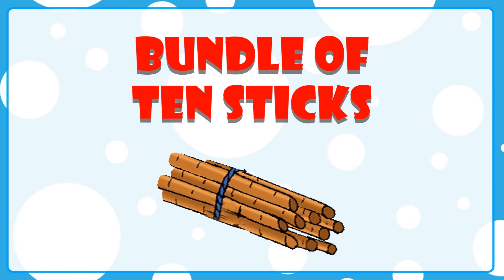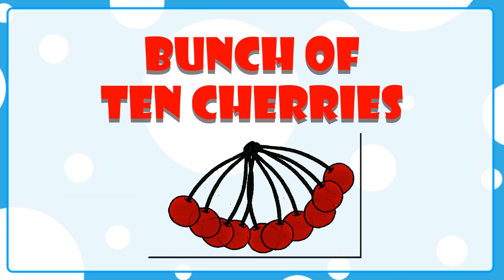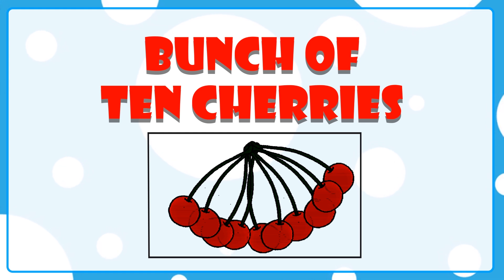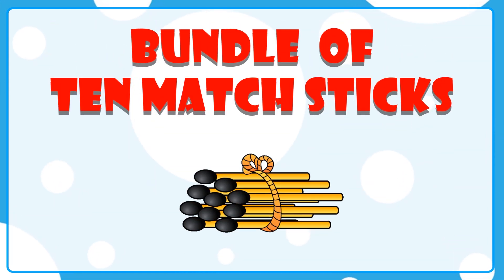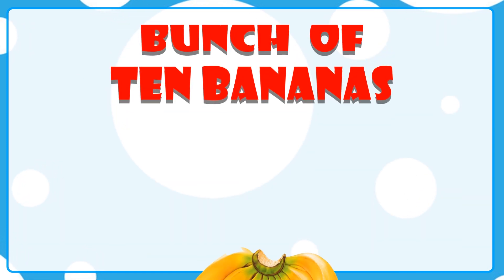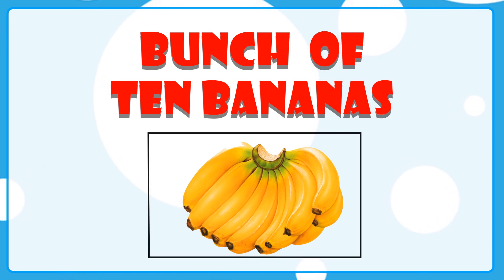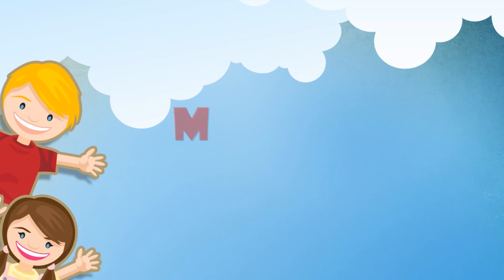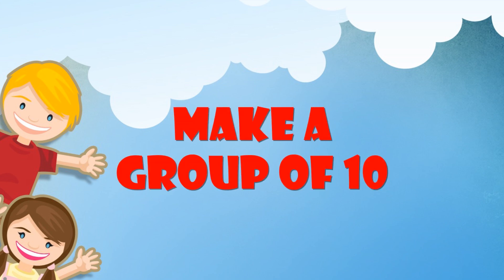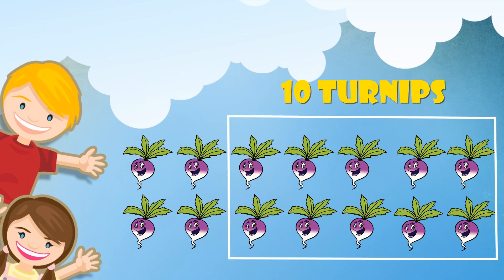There is a bundle of 10 sticks. There is a bunch of 10 cherries. There is a bundle of 10 matchsticks. There is a bunch of 10 bananas. Make a group of 10. 10 turnips.